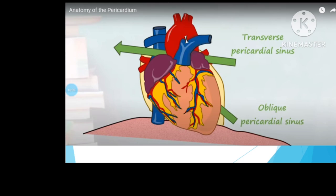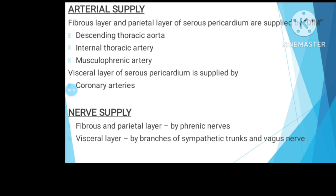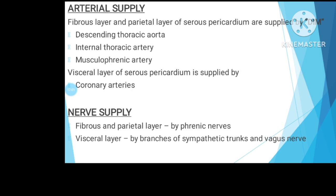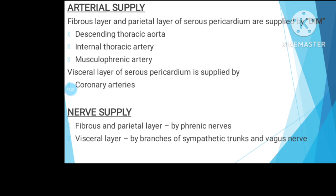Coming to the blood supply — abbreviated as DIM: D for descending thoracic aorta, I for internal thoracic artery, and M for musculophrenic artery. The visceral layer of the serous pericardium is supplied by the coronary arteries. For nervous supply: the fibrous and parietal layer is supplied by the phrenic nerve — the same nerve that supplies the diaphragm. The visceral layer is supplied by branches of the sympathetic trunks and the vagus nerve.